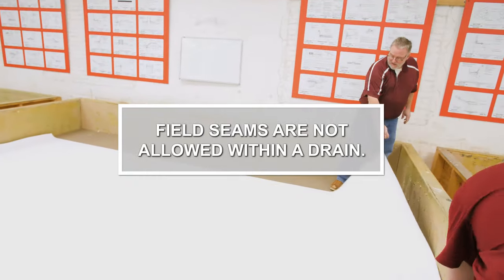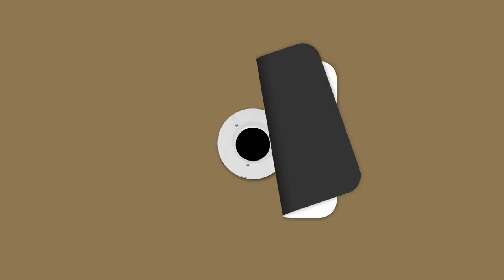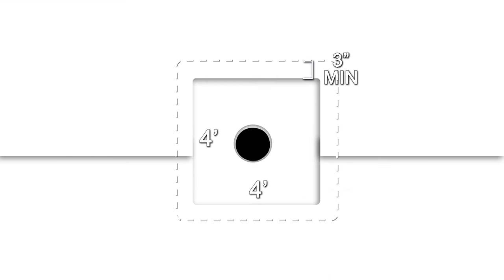Field seams are not allowed within a drain. If sheet layout has a field seam running into a drain, the seam must be removed and a minimum 4' x 4' target patch must be installed over the drain bowl.